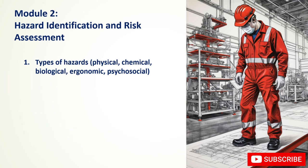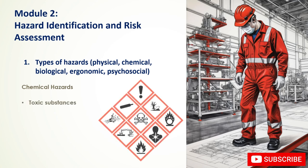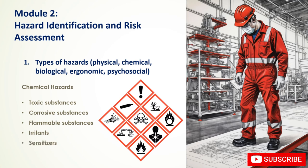Chemical hazards arise from exposure to harmful substances and can cause acute or chronic health effects. Examples include toxic substances that can cause poisoning or death, corrosive substances that burn tissue, flammable substances causing fires or explosions, irritants, sensitizers causing allergic reactions, and carcinogens that can cause cancer.